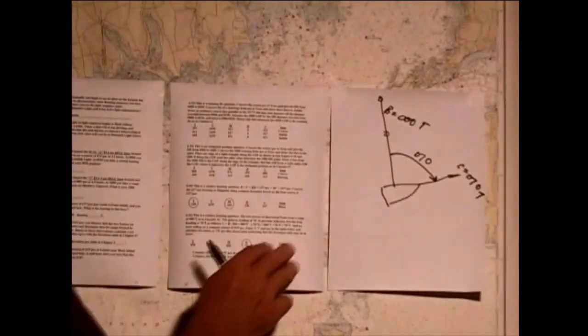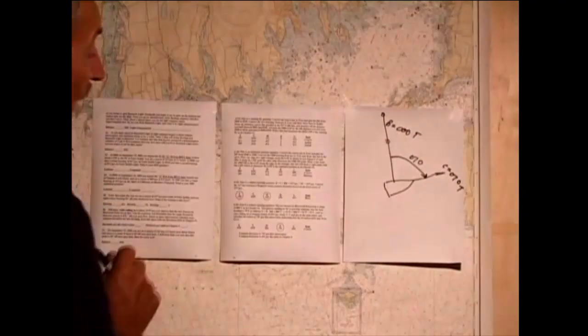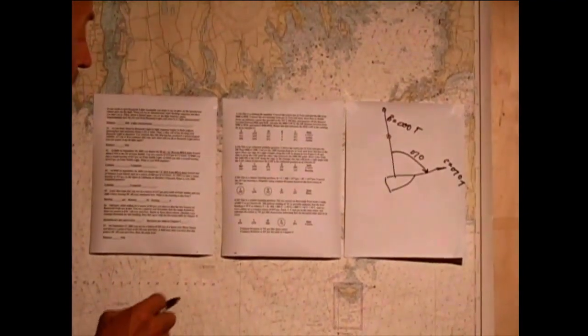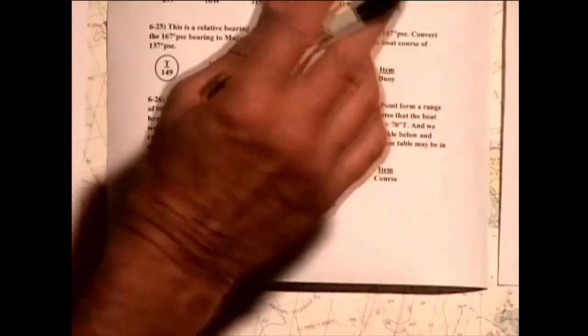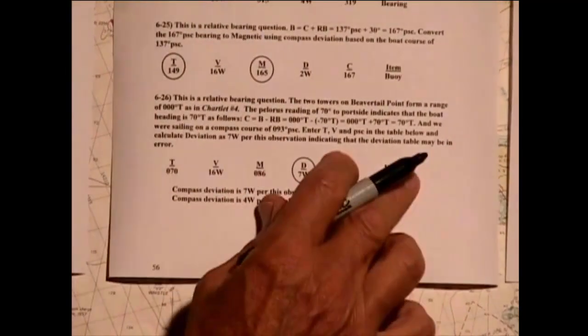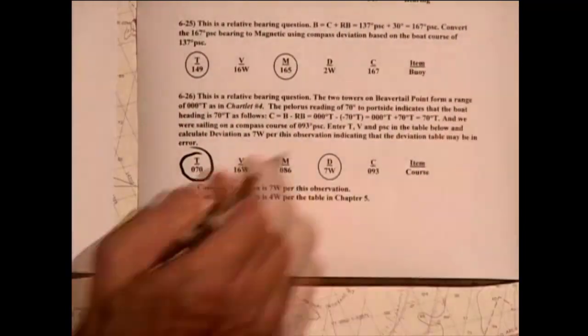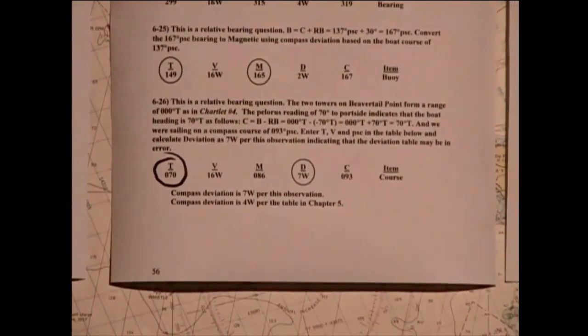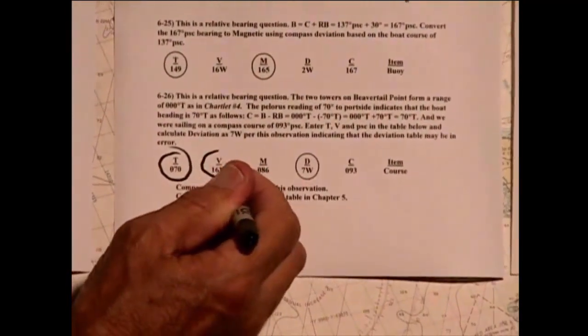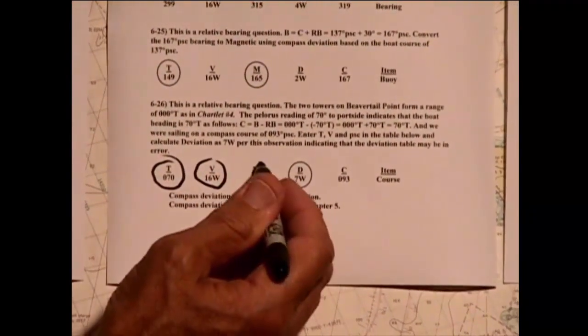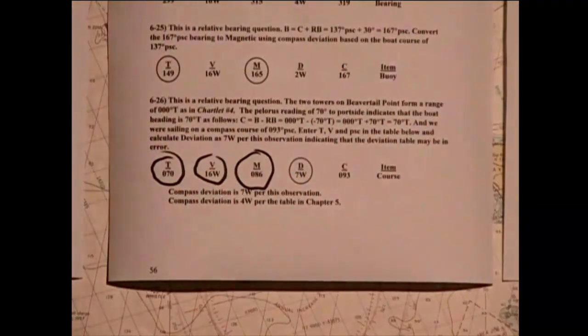So with that in mind, we come to our TVMDC and fill in the things that we know. We just calculated that the boat course — and that's what this TVMDC is based on — is 70 degrees true. We know that the variation in this area is 16 degrees west. So I take my 16 degrees west and add it to the 70, and I get 086 as my magnetic boat heading.